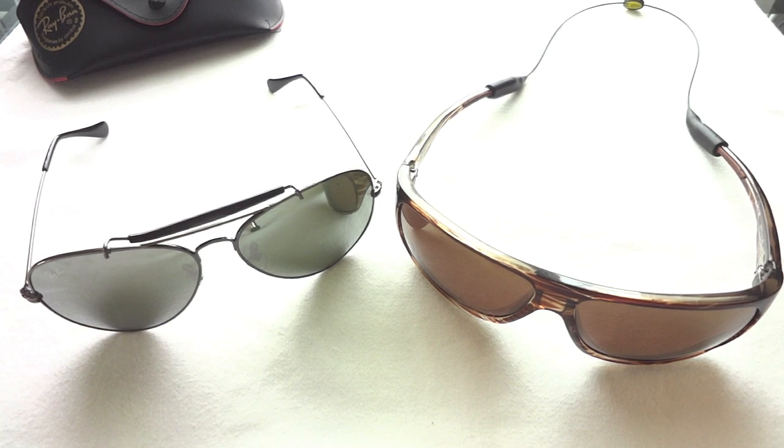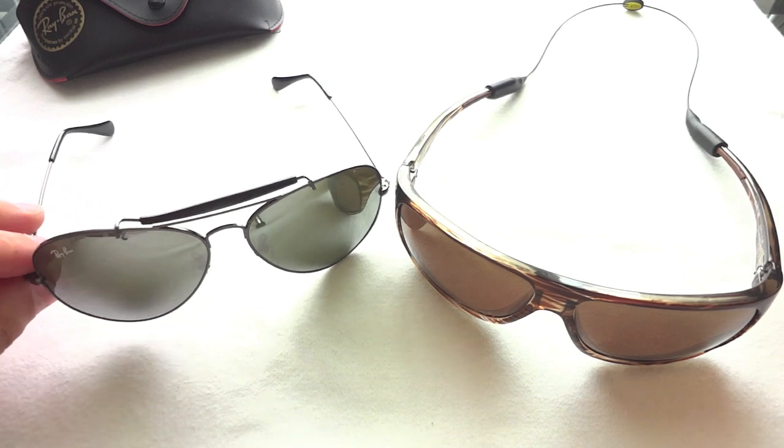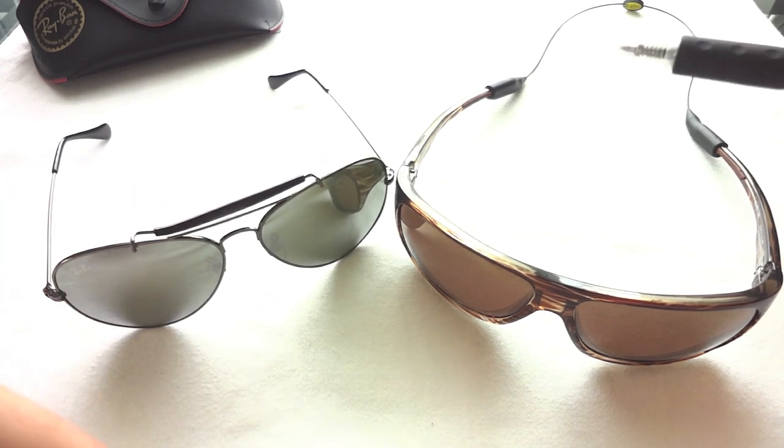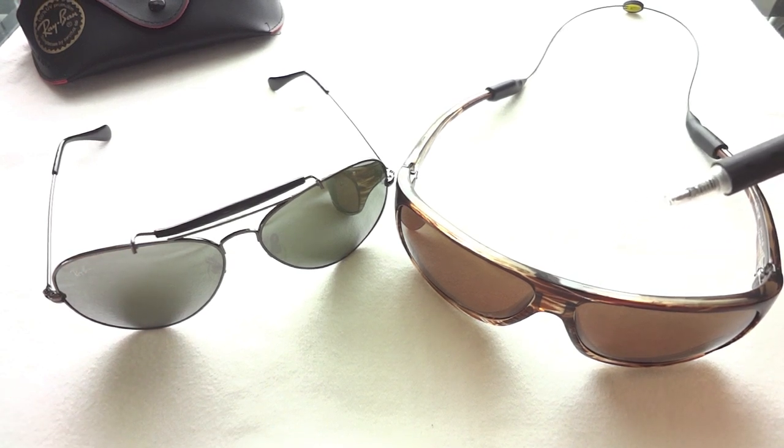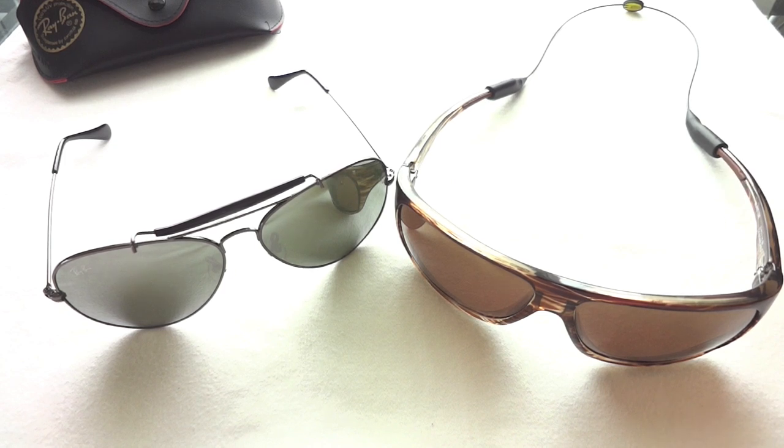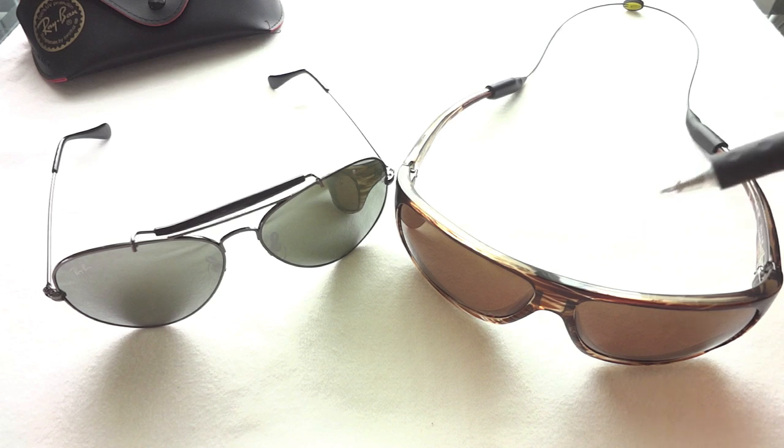Alright guys, we're going to look at two sunglasses today. On the left is the Aviator by Ray-Ban with mirrors, and on the right is the Island Times by Maui Jim. I own both of them but use them for different purposes, so we're going to look at them a little closer.